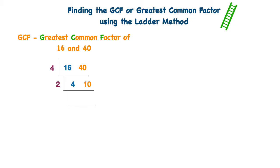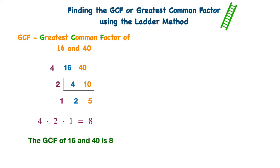I continue down my ladder: 2 times 2 is 4, and 2 times 5 is 10. Then I look at 2 and 5, and the only shared factor of 2 and 5 would be 1. Once I reach 1, I know that I'm done. My greatest common factor is found by multiplying the shared factors on the left of the ladder. So I multiply 4 times 2 times 1 and I get 8. The greatest common factor of 16 and 40 is 8. You'll also notice that 8 is less than 16 and less than 40.